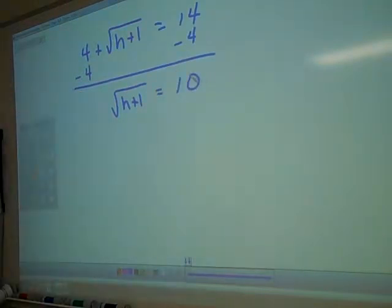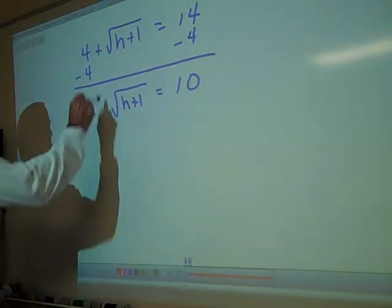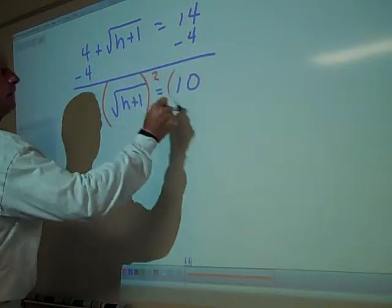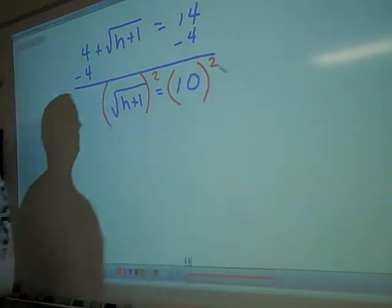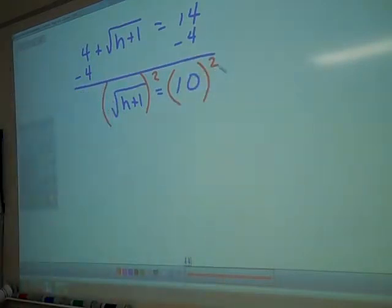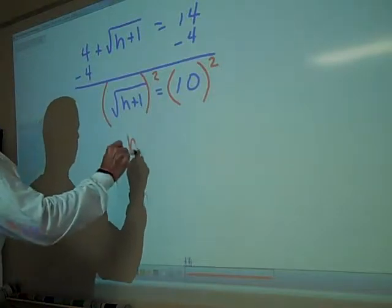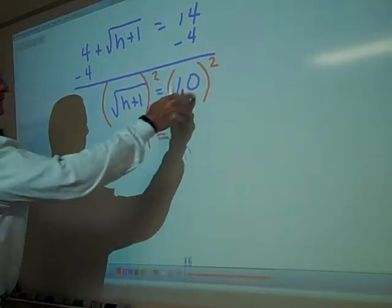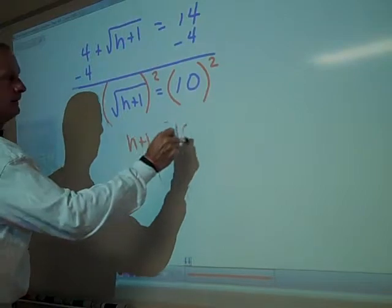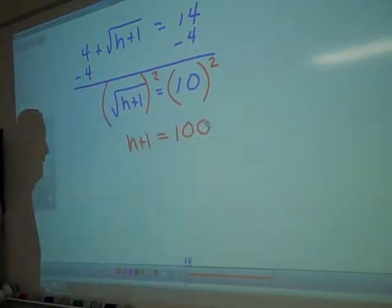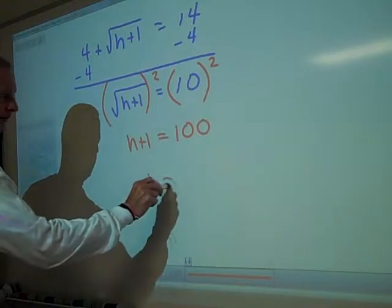Next step, Ms. Abigail. You square both sides. Square both sides. I'm going to square left side, square the right-hand side. What is the quantity of the square root of h plus 1? H plus 1. And 10 times 10 is 20, correct? It's not 20. It's 100. Subtract 1 from both sides. H equals 99.